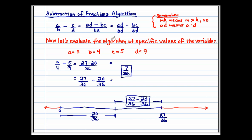Now let's evaluate the algorithm at specific values of the variables. We're going to know that A equals 3, so I'm going to put 3 there. B equals 4, so I'm going to put a 4 in the denominator of the first fraction. Subtract 5 ninths from that fraction as well.